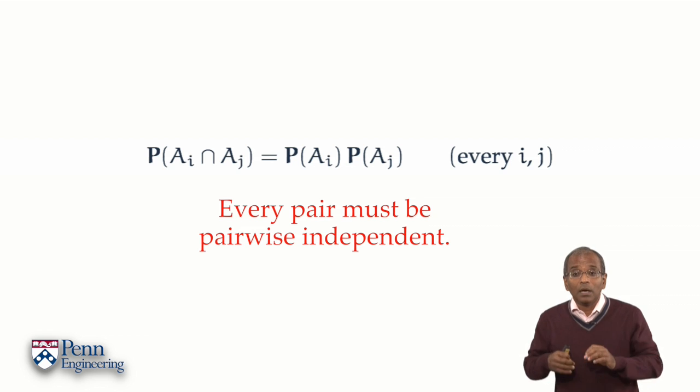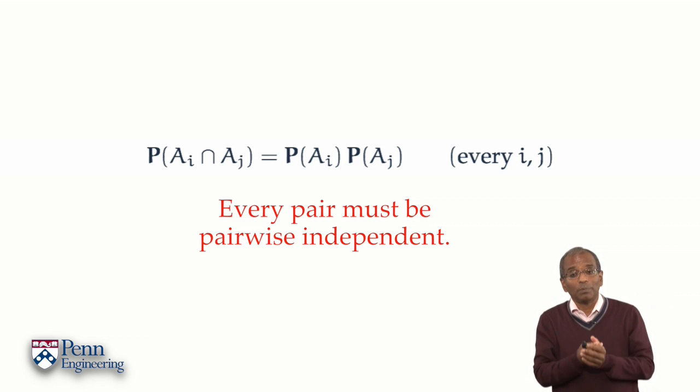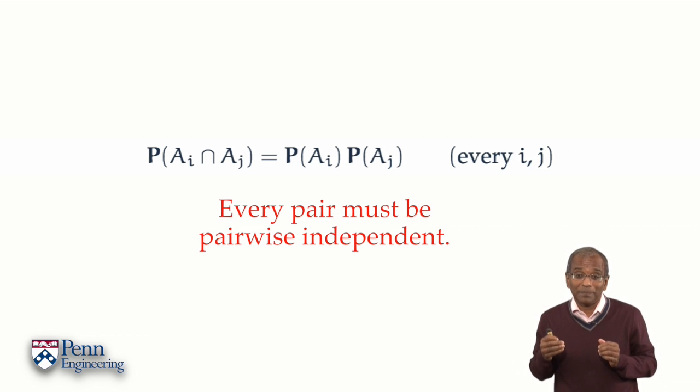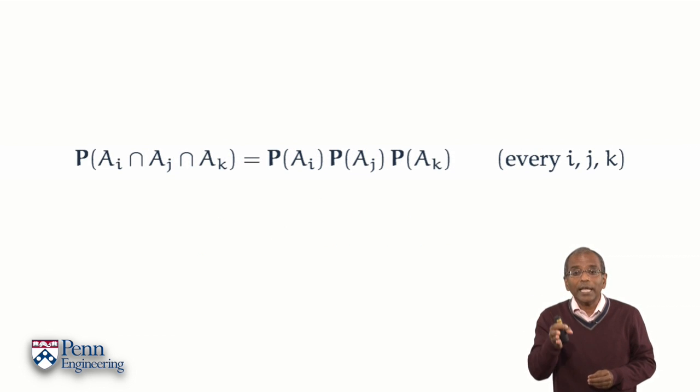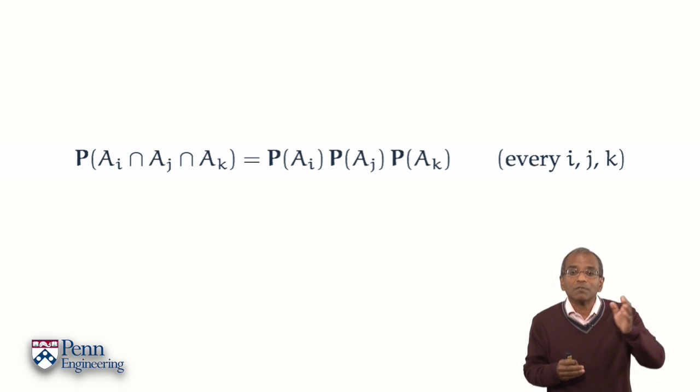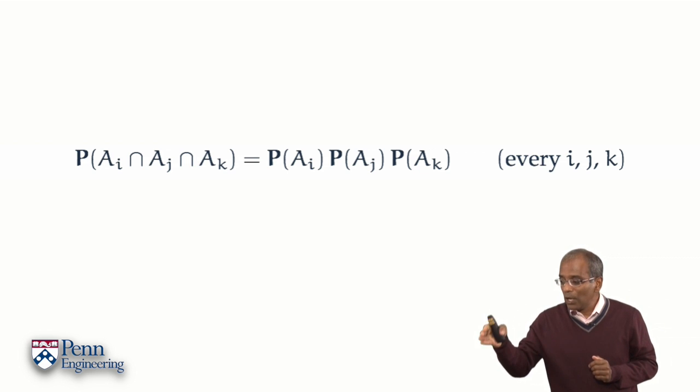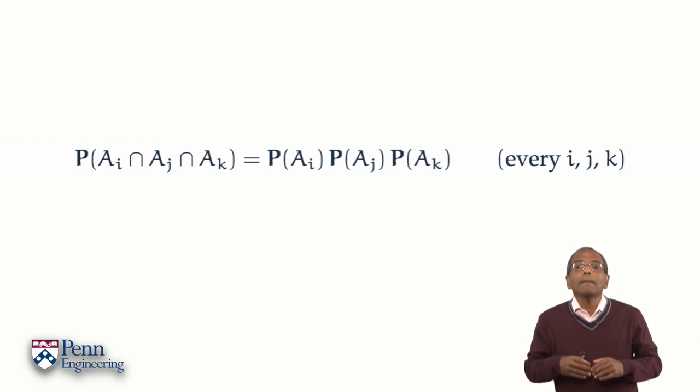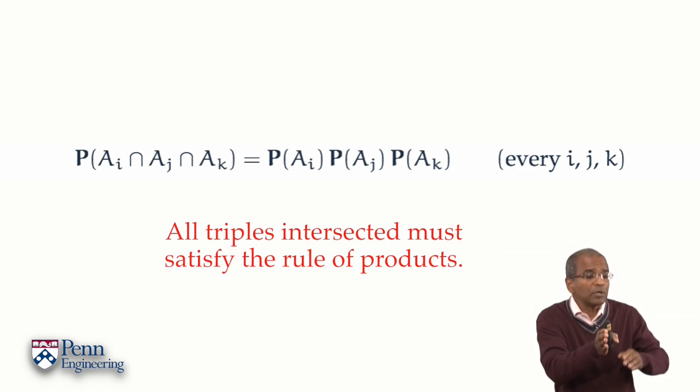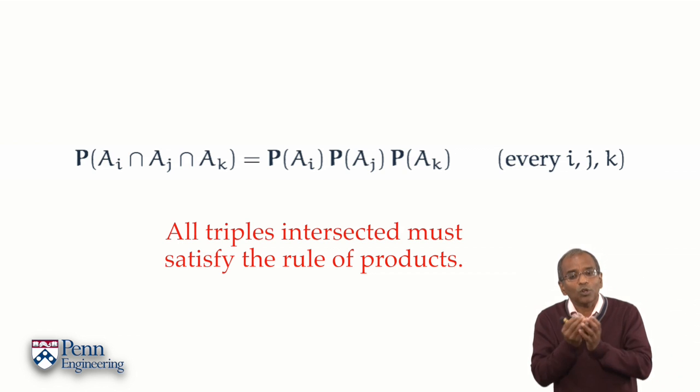Ah, but that's not enough. Once you've exhausted all possible pairs, and there could be an infinity of them, we now look at all possible triples. A1, A2 and A3 intersected must satisfy a rule of products. A1, A2 and A4 intersected must satisfy a rule of products, and so on. A2, A3, A4 intersected must satisfy a rule of products, and so on. All conceivable triples intersected must satisfy a rule of products.